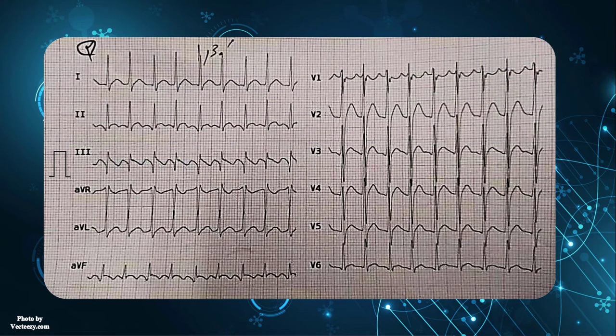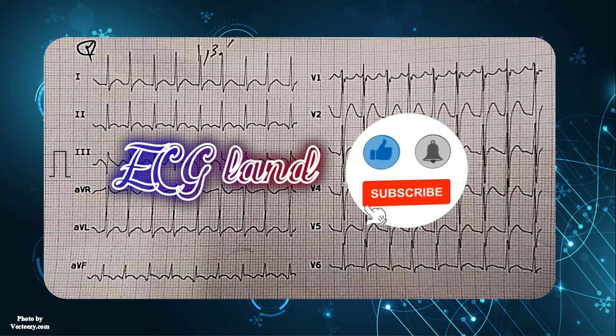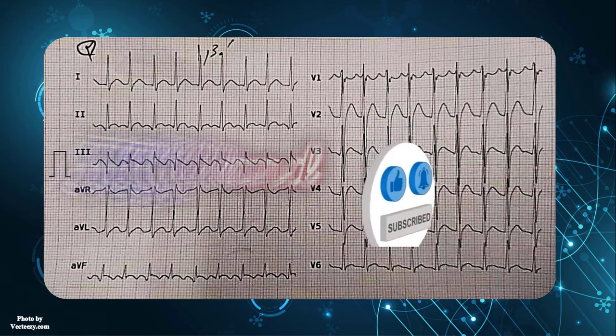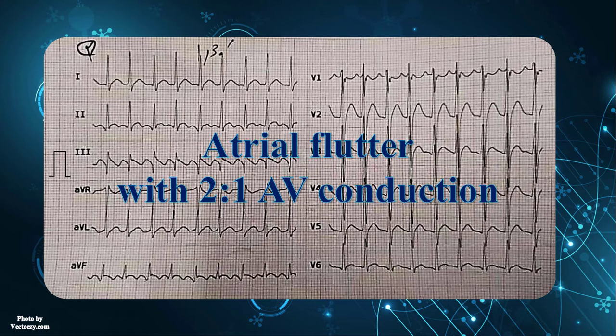The final step is overall interpretation. In order to interpret the EKG properly, we should make a list of abnormal findings. Atrial flutter at a rate of 166 beats per minute is the only abnormal finding in this strip.